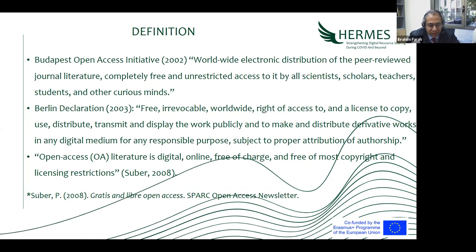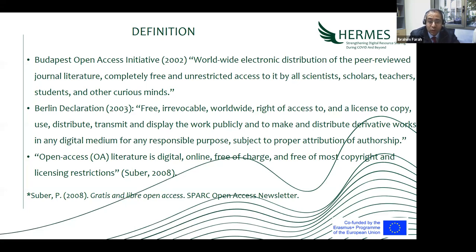With an open access publication, you can do whatever you want with it as long as you attribute the author. You can access it for free and create derivative works — for example, a translation of a novel is a derivative work. You can distribute it freely, but you must cite the author, because it is immoral not to. This definition is from Suber in 2008.